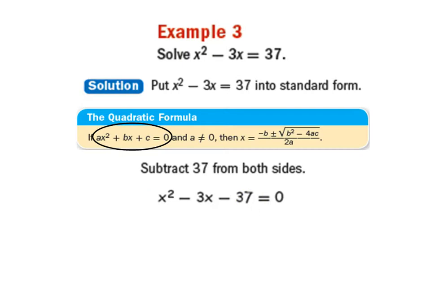So now we're in a position to where we can use the quadratic formula to solve this equation. So we're going to apply the quadratic formula, where we know that a is 1 because there's nothing in front of the x squared. So there's a 1 there. b is negative 3 because there's a negative 3 in front of the x. And c is negative 37 because of the negative 37 right here.